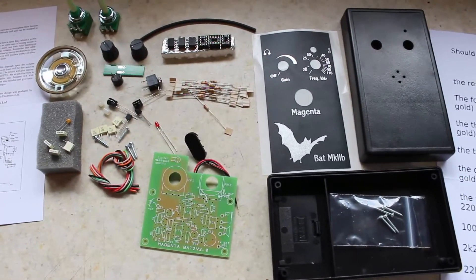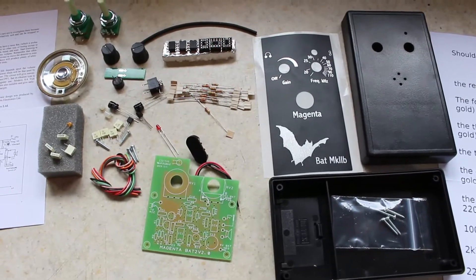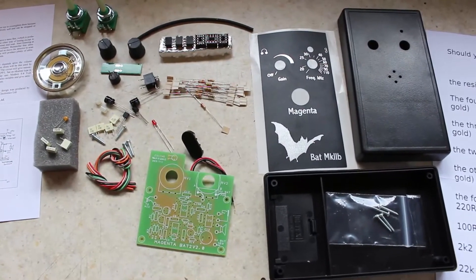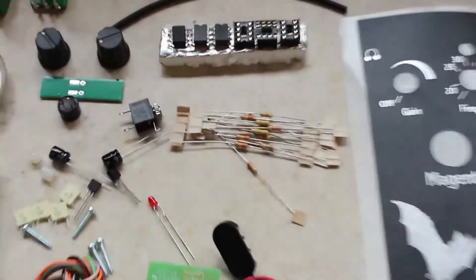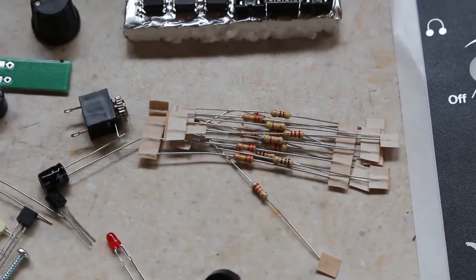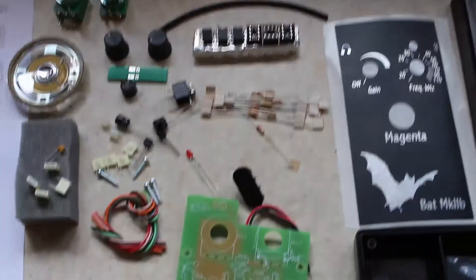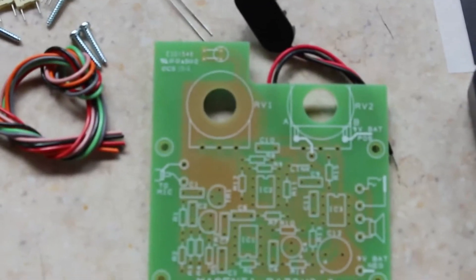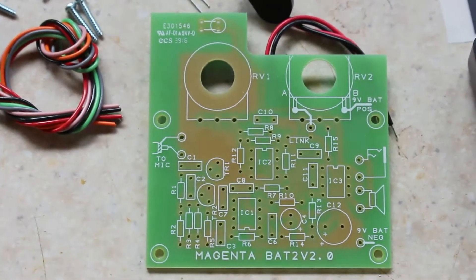This is all the bits of the kit. You get all the bits needed to make this device and the instructions are quite clear. It says start with the resistors, so we're going to fold those up, put them in the PCB and solder those in place. The PCB looks really nice and well marked out.